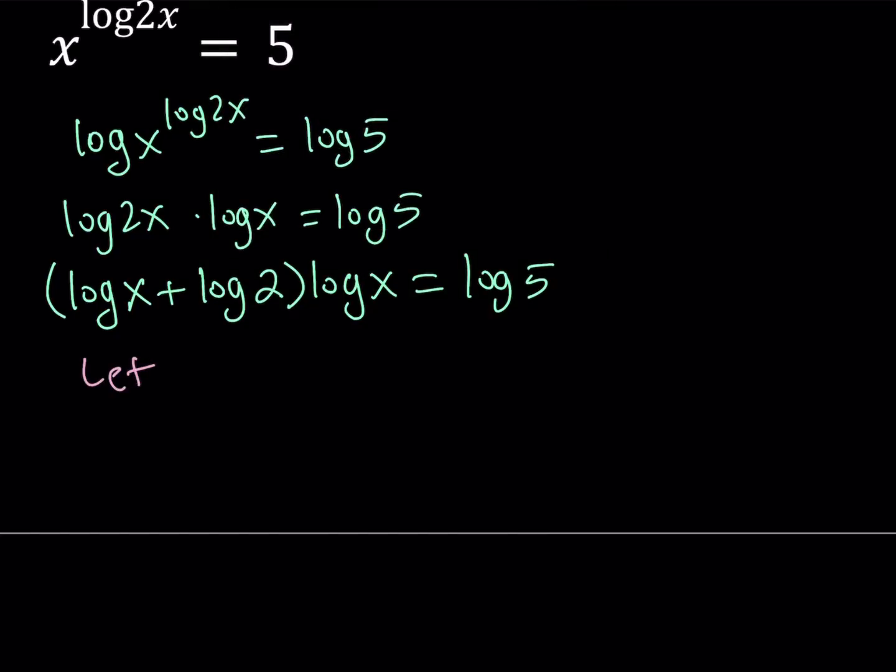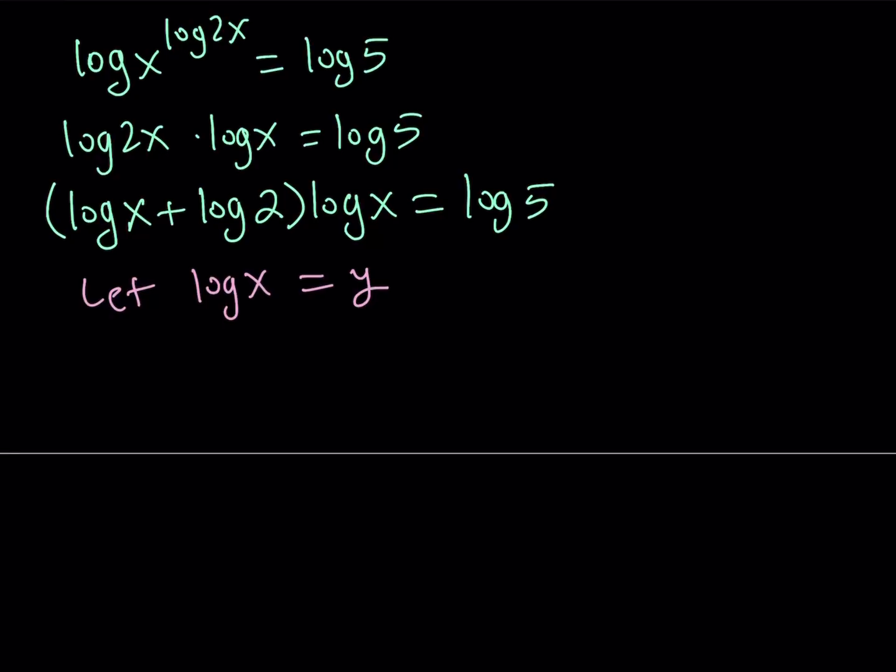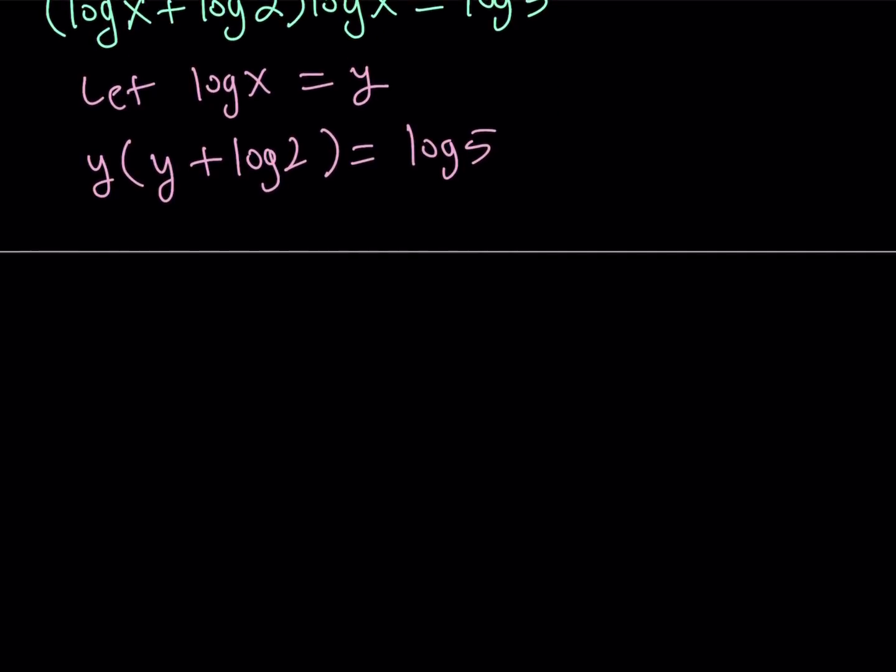Let log x equal y. This gives us y times y plus log 2 equals log 5. And then we get y squared plus the quantity log 2 multiplied by y minus log 5 equals 0.